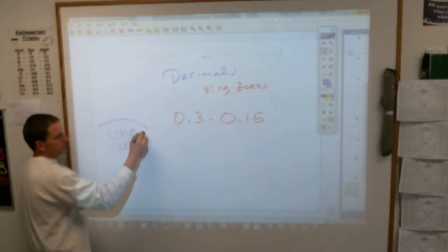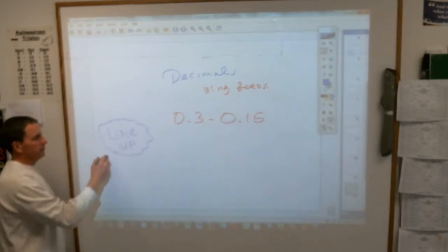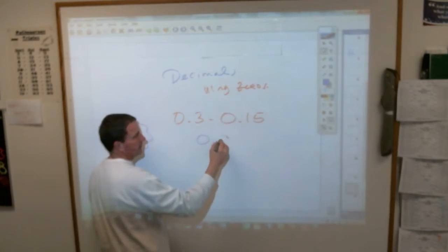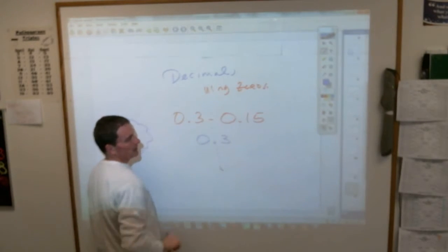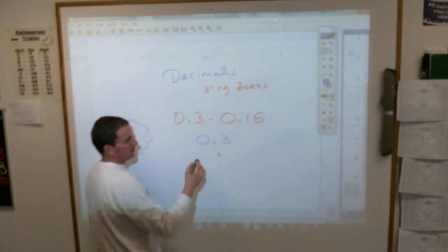Usually when you do subtraction you're used to lining up the right ends of the digits because that's all you've been dealing with. But here that can't be the case. You have 0.3 and if you're using our line up digits, our line up the decimal thing, the decimal 0.15 has to go there.